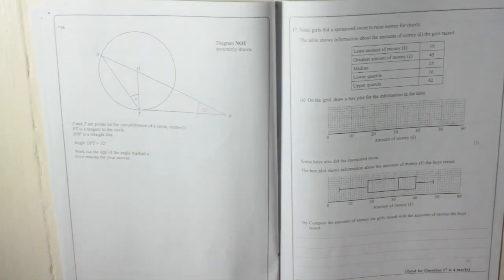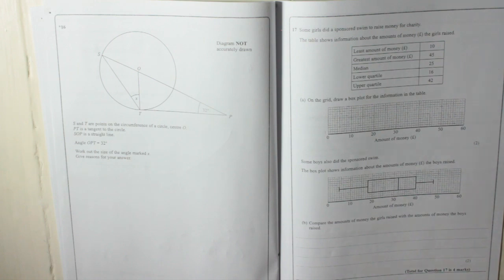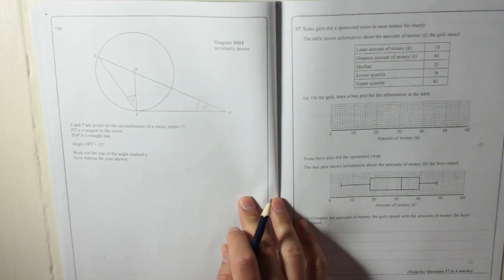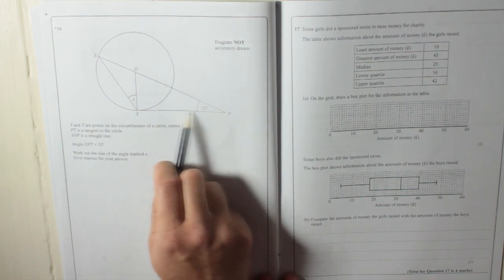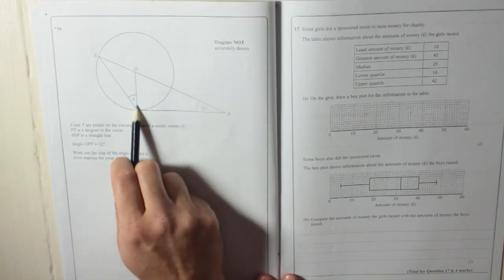So very important you actually give reasons for your answer. The reasons are not the working out. The reasons are something that you're going to write down as a sentence. So what we got? We got 32 degrees, we got a tangent, and we've got a radius.